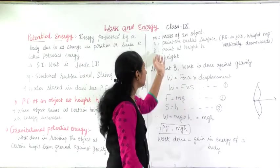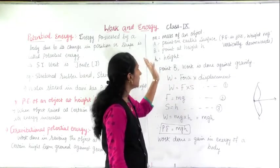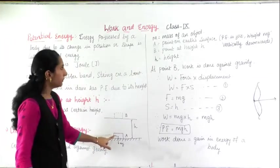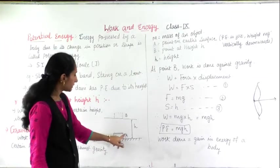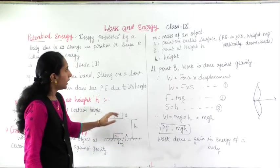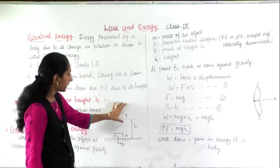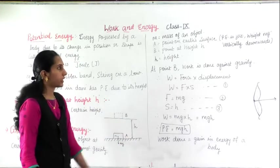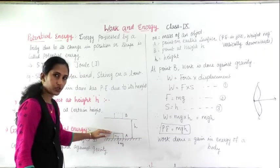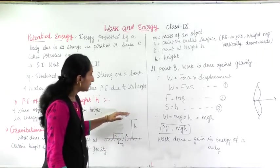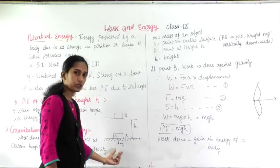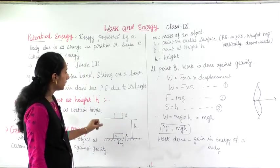Now we will go to the remaining part of the derivation. Mass of the object is m, A is the point on the earth's surface, B is the point at height h, and h is the height as I have explained. At point A, potential energy is zero. Weight is vertically downward, and at point B we are going to see the work done against the gravity.